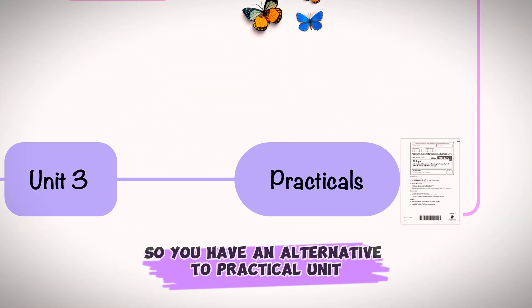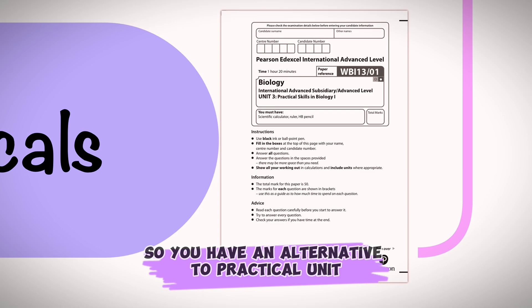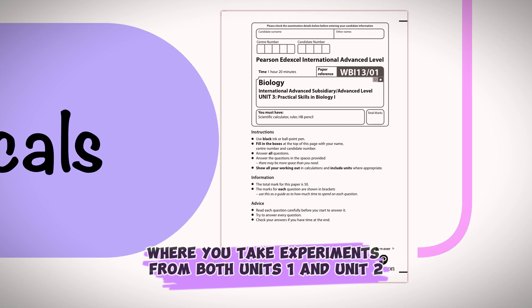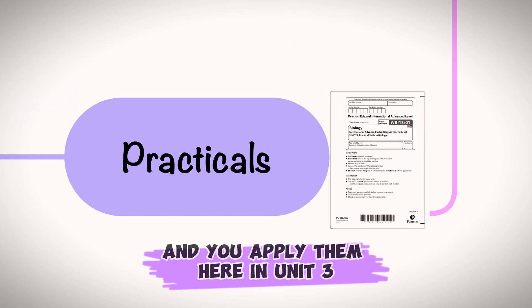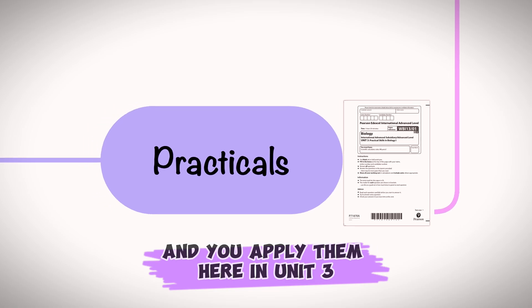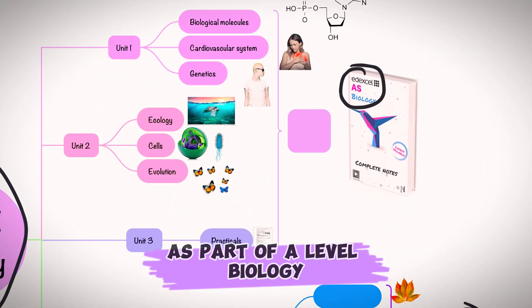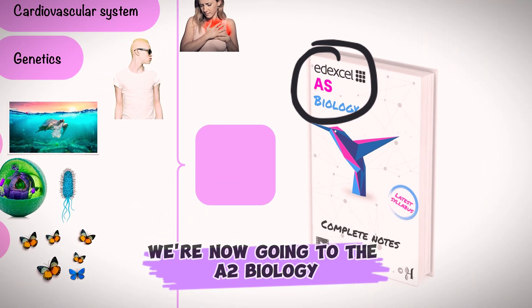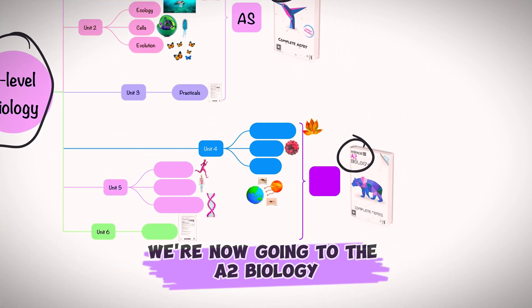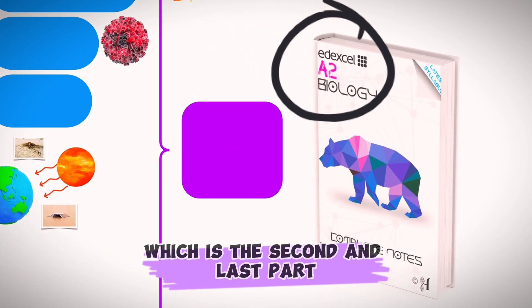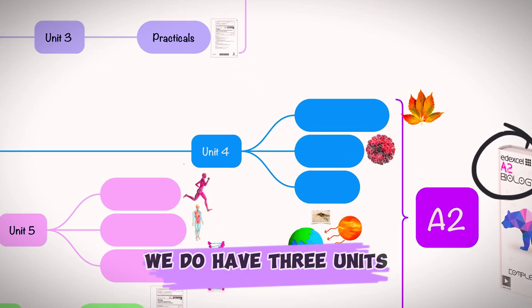Unit 3 is the practical unit. You take experiments from both Units 1 and 2 and apply them in Unit 3. This means we're done with the A-S part of A-level biology. We're now moving to A-2 biology, which is the second and last part, and it also has three units.